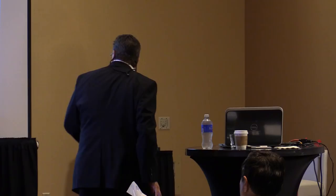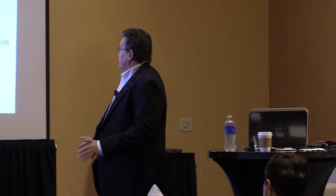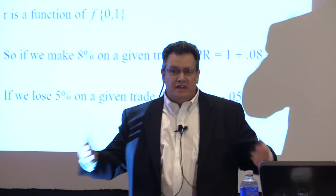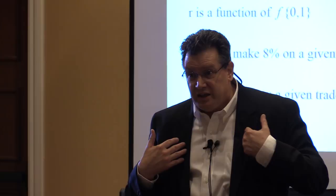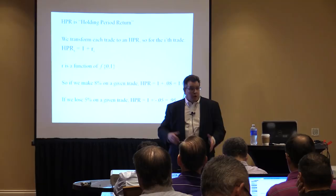On every trade we have a return R, and if I add one to that return, I have what I call a holding period return. So each trade I can transform — making $800 on $100,000 is .008, so 1.008. By transforming these things into holding period returns, we open the door into a fantastic but simple geometry that dictates what we should be doing in the marketplace and with our indicators.